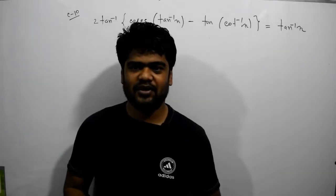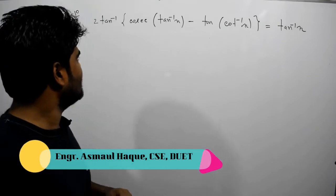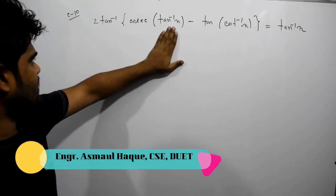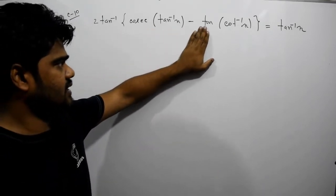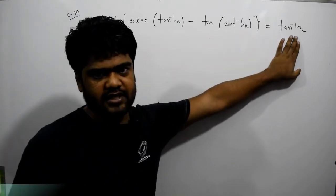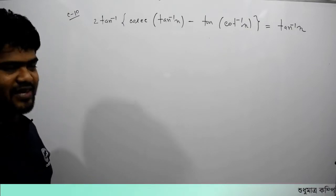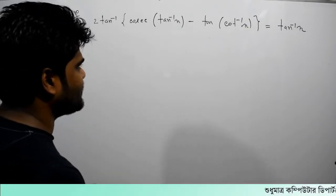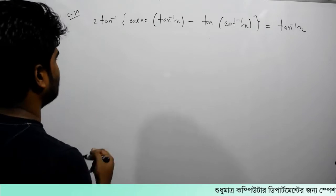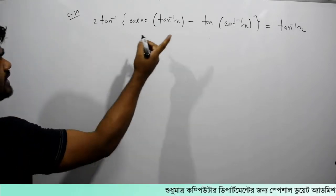I am going to show you the last one. How do you say that? 2 tan inverse cosec tan inverse, minus tan inverse. It is the same as tan inverse x. This is important. Let's start by calculating. I am going to show you the right hand side.